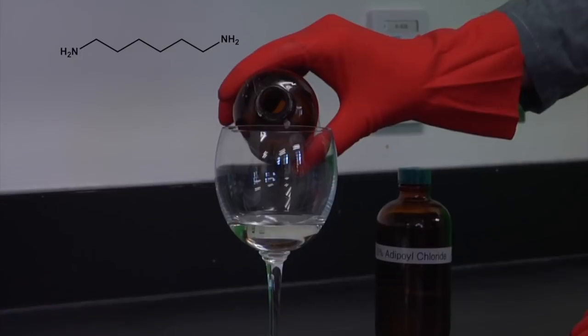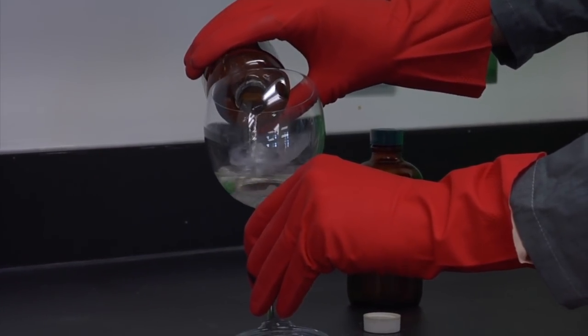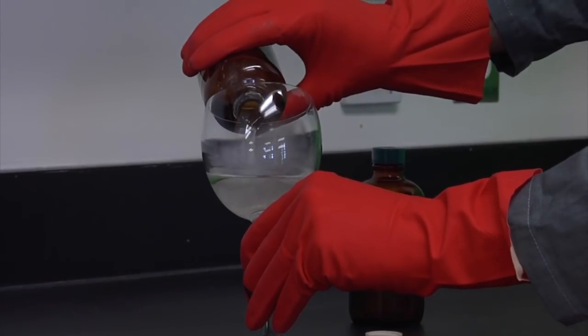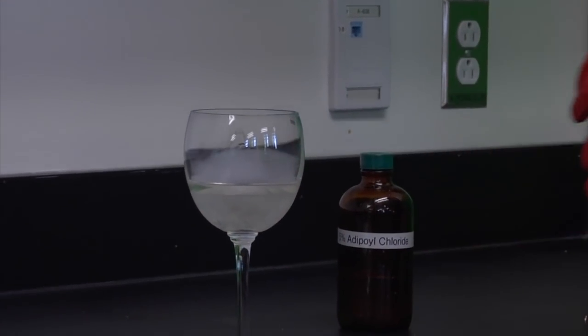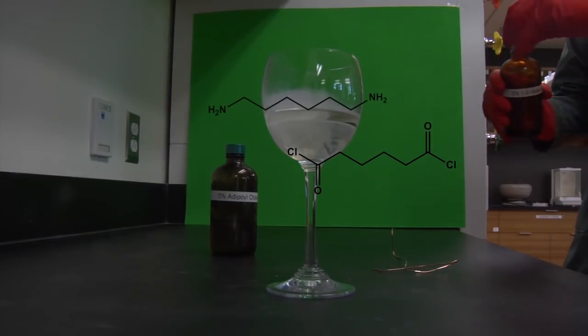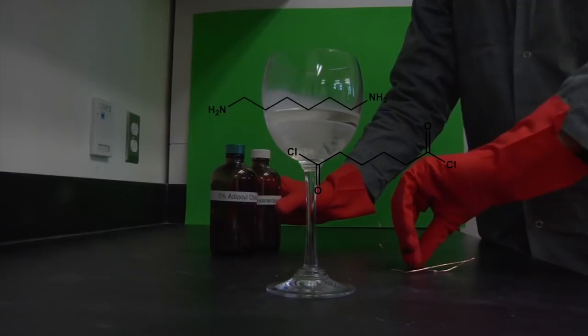Whenever the two layers meet, this is where you will have the synthesis of nylon. As you can see, there are two layers being formed. At the junction of the layers, this is where the nylon is forming.